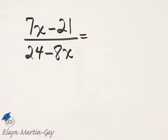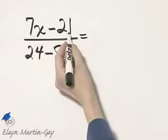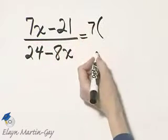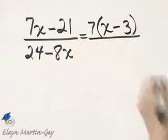Let's concentrate on the numerator for a moment. There's a common factor in these two terms of 7, and when I factor it out, I have left x minus 3.